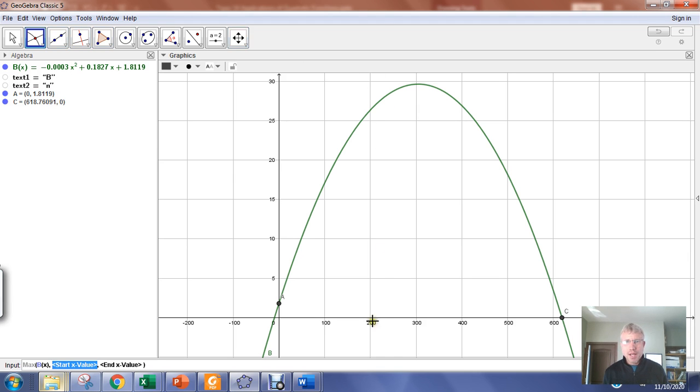And what you need to do is input an X value that is to the left of the vertex. So I see the vertex is occurring here at about 300. So for example, I could put 200 in. So type 200. And then hit tab.